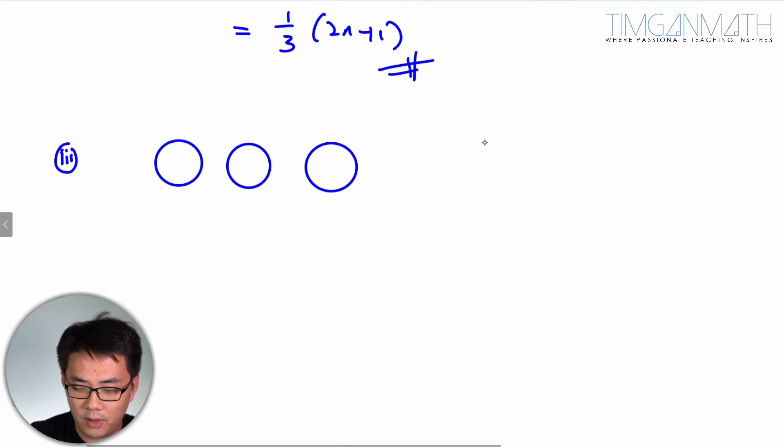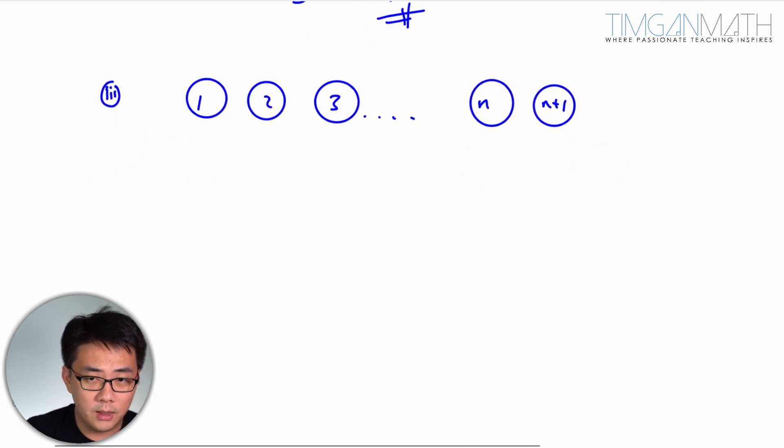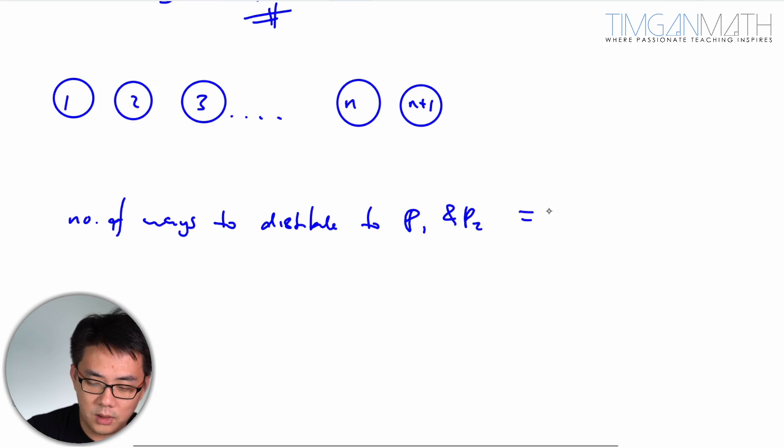So in this case here, if you have tokens from 1, 2, 3, all the way to N and N plus 1, the number of ways to distribute to P1 and P2 is actually just N plus 1 choose 2, you just need to choose 2, times 2 factorial.